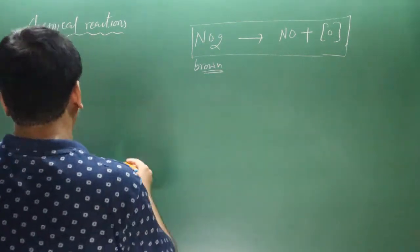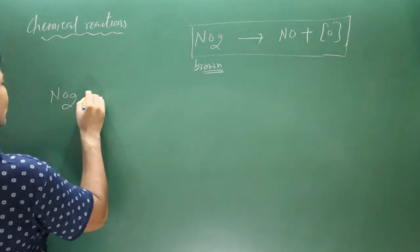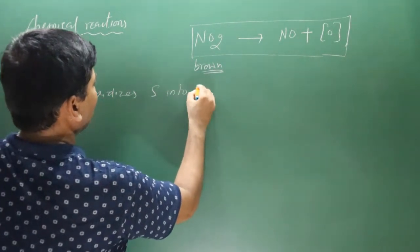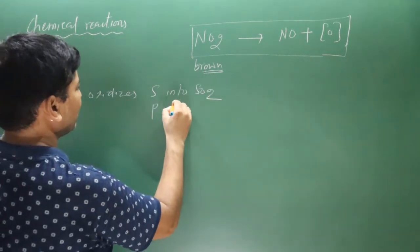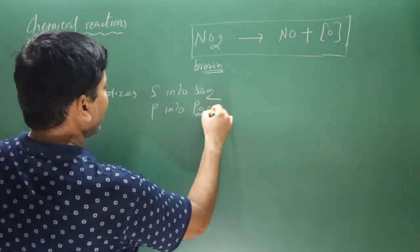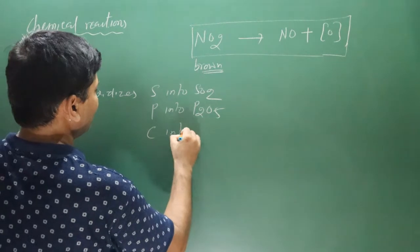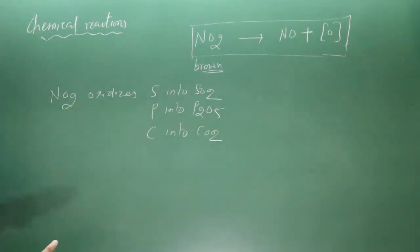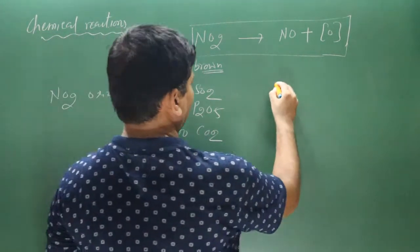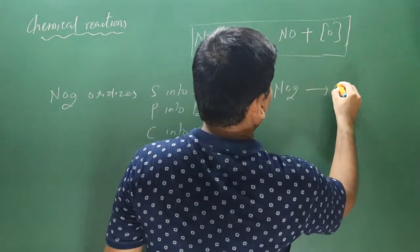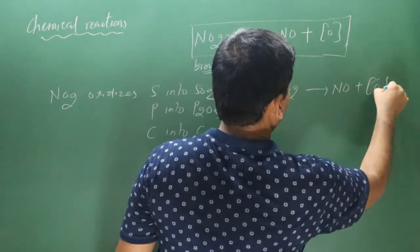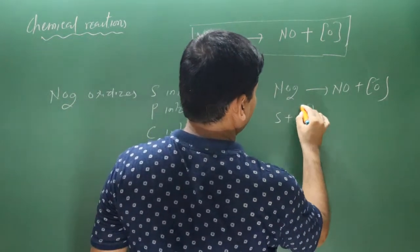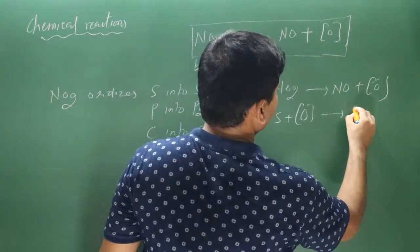NO2 oxidizes sulfur into sulfur dioxide (SO2), phosphorus into P2O5, and carbon into carbon dioxide. Using the base equation, nascent oxygen from NO2 oxidizes sulfur to give SO2.